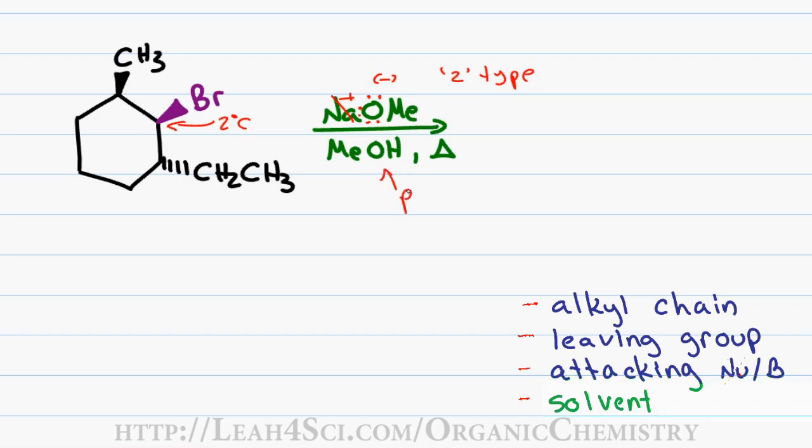Next we look at the solvent MEOH which is simply methanol. Methanol is polar and protic which means in a two-type reaction, elimination is going to be favored over substitution because the polar protic solvent tends to cage a nucleophile and slow down that SN2 reaction.